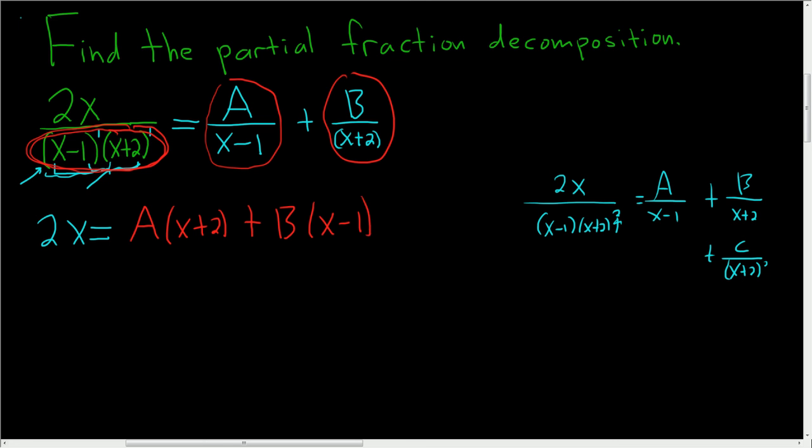At this point, the question you want to ask yourself is, what can you plug in in order to make things 0? Well, negative 2 will work because it'll make this 0, and 1 will work because it'll make this 0. So let's go with negative 2 first.